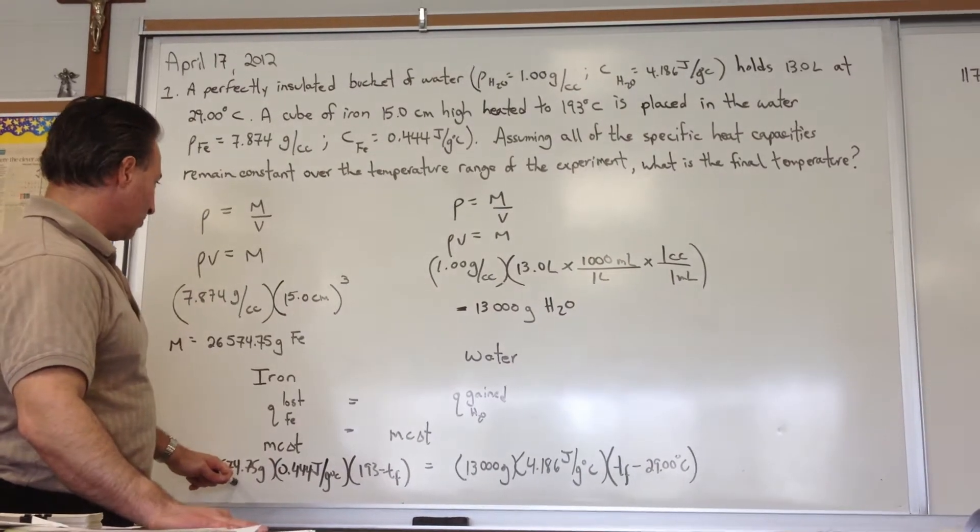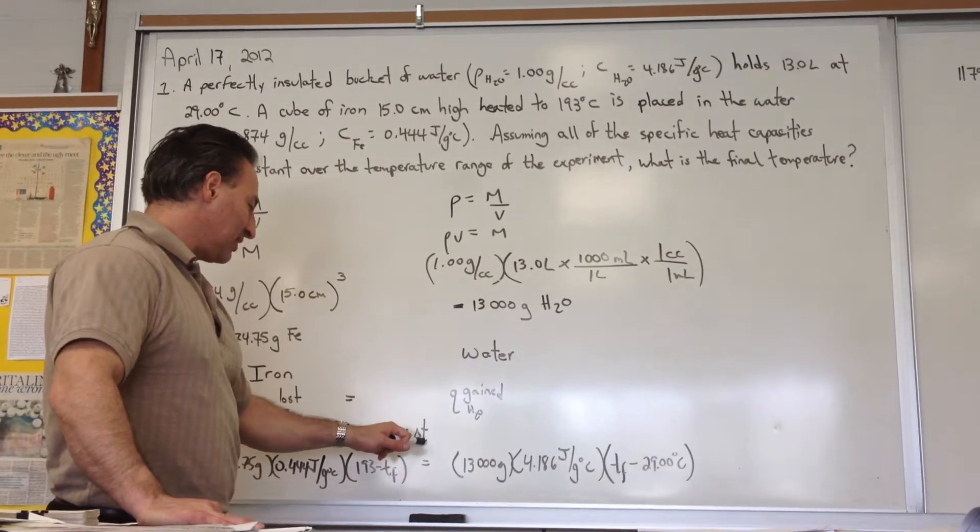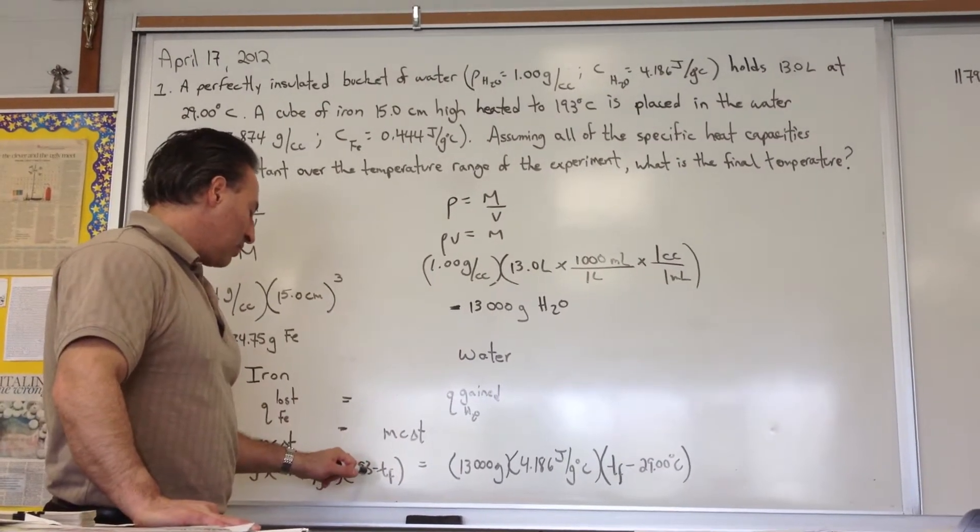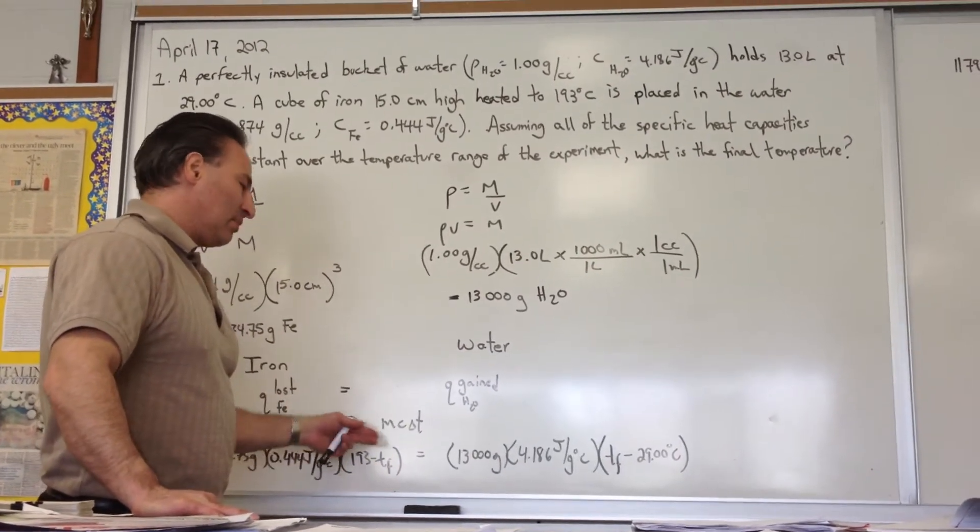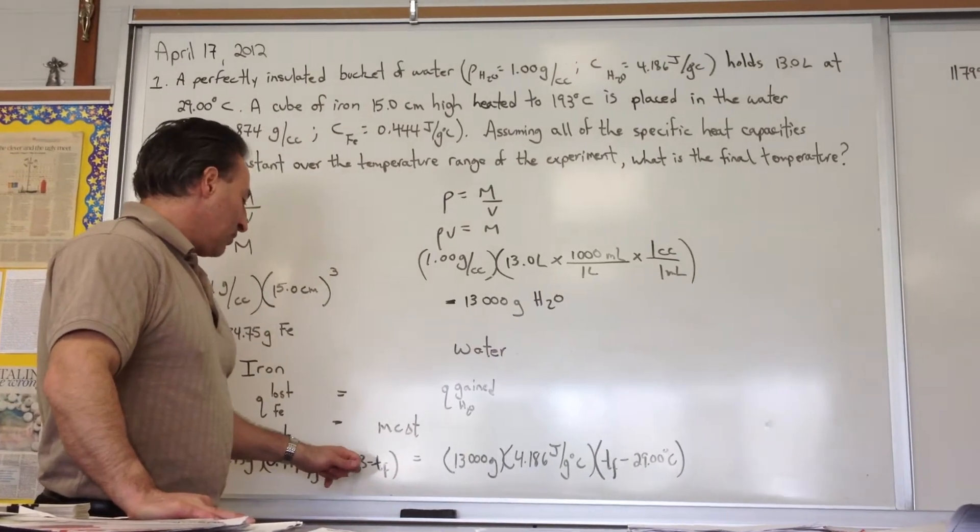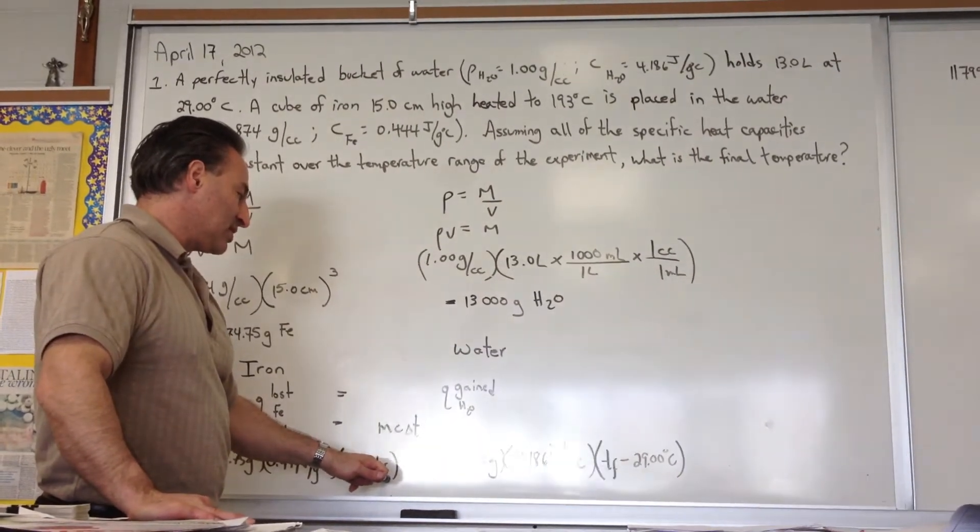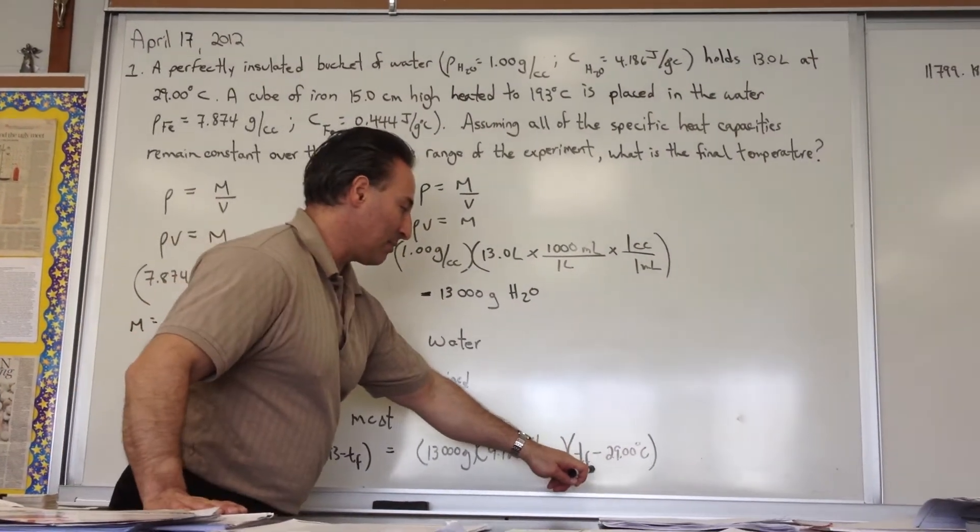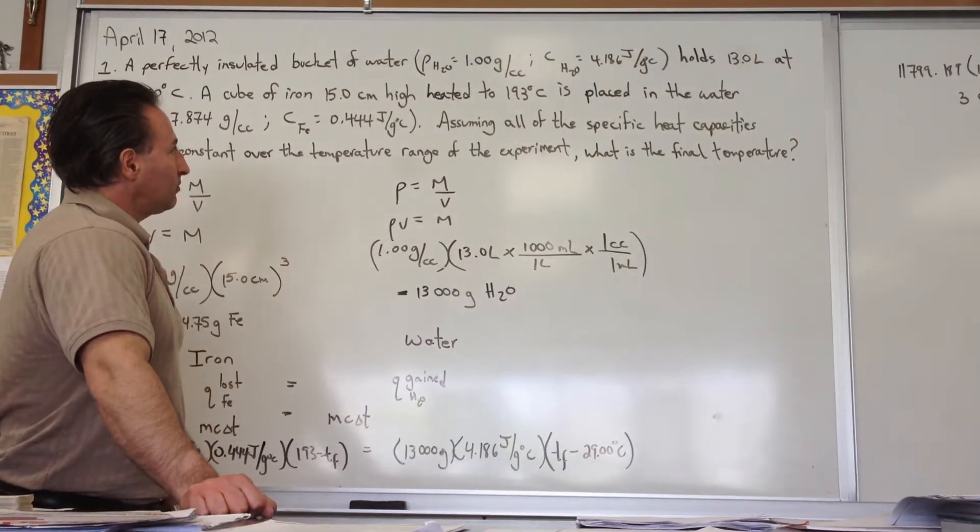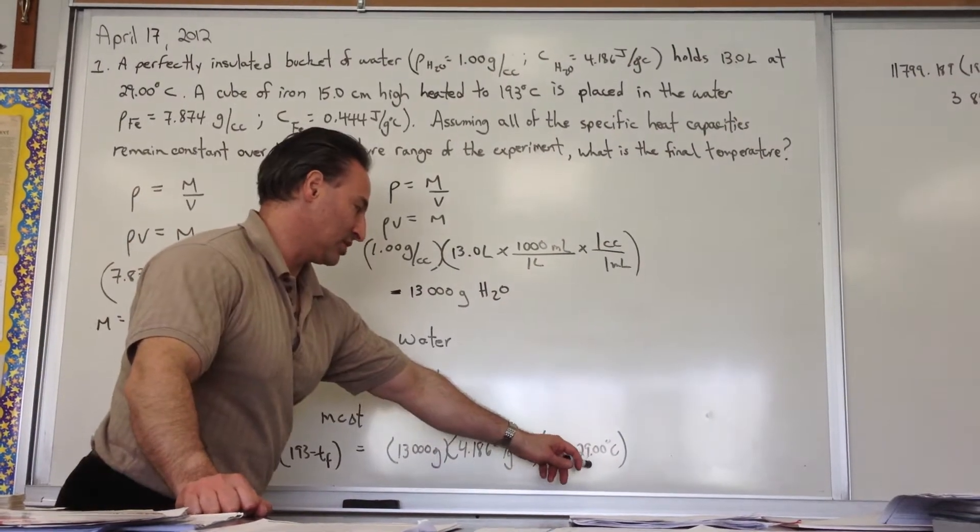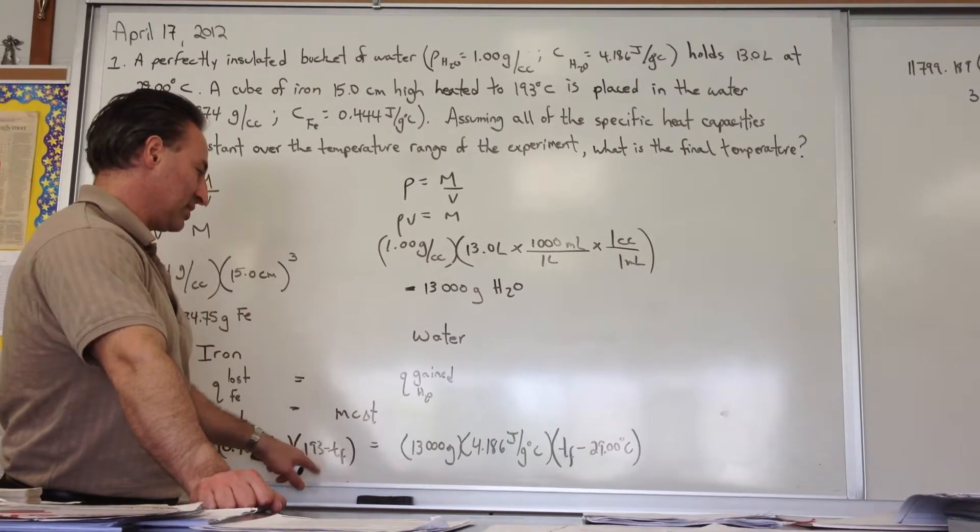Then we plug in the values of each one of the things that we calculated: the mass of the iron, the heat capacity of the iron, and the temperature change. Instead of putting delta t, we put Ti minus Tf here. We keep the values positive by putting the bigger number first. We'll worry about the sign conventions after the problem is over. So 193 is the starting temperature of the iron, and it's going to cool down until it reaches the same temperature as the water, which is warming up.